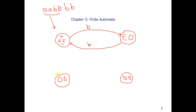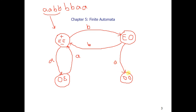Similarly, from even-even, if we read another A, we move to odd-A/even-B, since the A count becomes odd. If we add another A it becomes even again and we return. From even-A/odd-B, if we read another A, A's also become odd, so we move to odd-A/odd-B. Reading another A makes A's even again, returning us to even-A/odd-B.